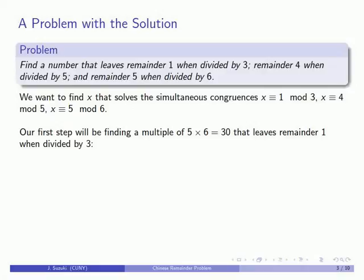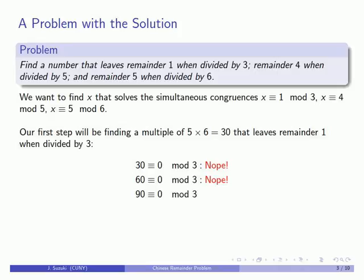Our first step in applying the algorithm is to find a multiple of 5 times 6 — a multiple of 30 — that leaves remainder 1 when divided by 3. Let's check: 30 is congruent to 0 mod 3, nope. 60 is congruent to 0 mod 3, nope. 90 is congruent to 0 mod 3, nope. I could continue, but it's worth keeping in mind a useful rule of life.